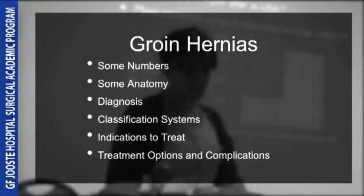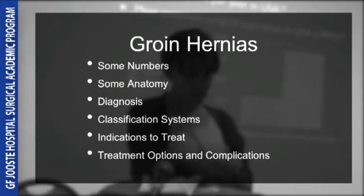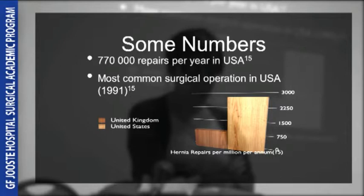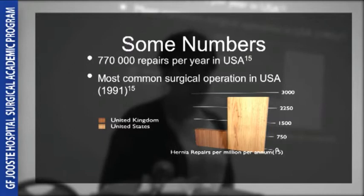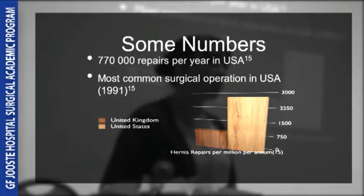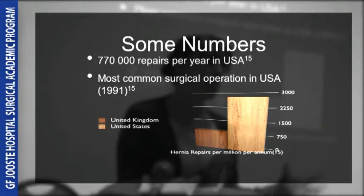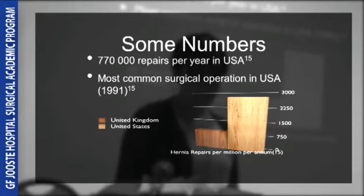Just looking at some numbers. The true incidence of groin hernia is not clear, but the repair of these hernias forms a large bulk of modern-day surgical practice. Inguinal herniorrhaphy is probably the most commonly performed procedure by general surgeons, with about three-quarters of a million hernias being repaired in the United States each year alone. Patterns of repair are not the same worldwide — about three times more hernias are repaired per million members of population in the United States compared to the United Kingdom.